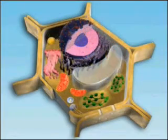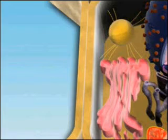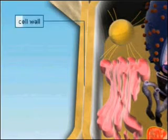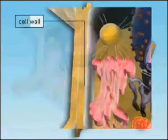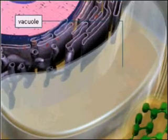Compared with animal cells, plant cells are surrounded by an additional envelope, the cellulose cell wall. Plant cells also have special vacuoles that contain a high concentration of solutes.